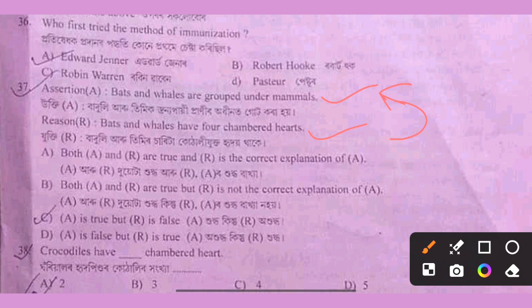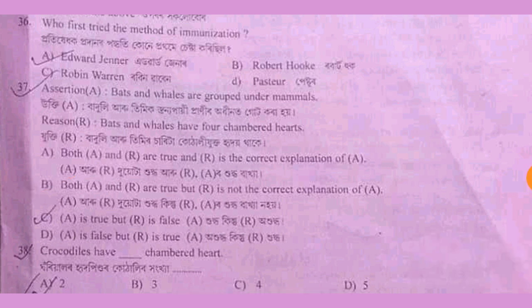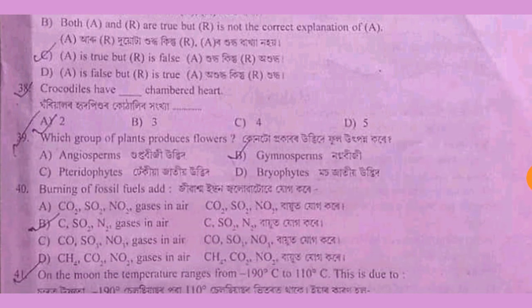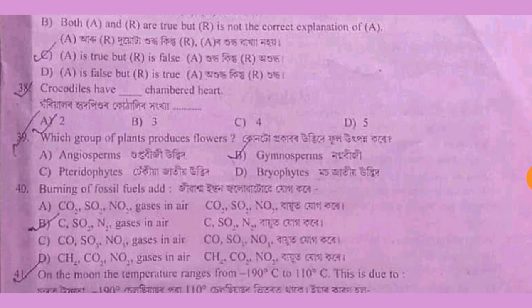This is option B — both A and R are true, but R is not the correct explanation of A. Question 38: crocodiles have four-chambered hearts, and so do birds.